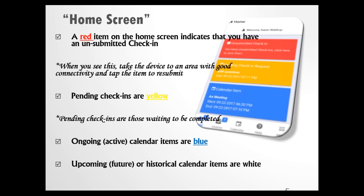Pending check-ins are shown in yellow — those are check-ins that are due and waiting for you to complete them. Ongoing or active calendar items are blue. Upcoming, future, or historical calendar items — that is, items in the past — are white.